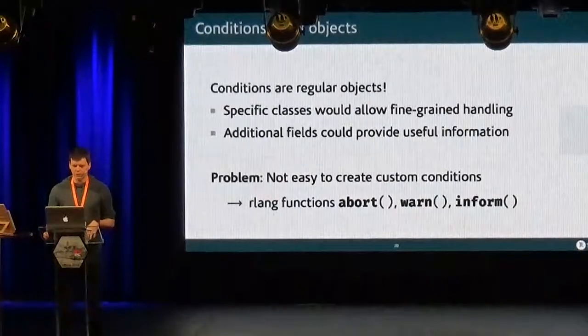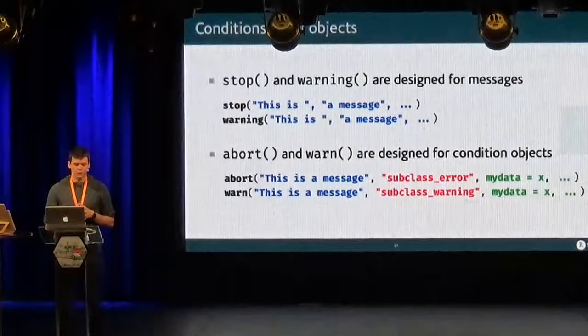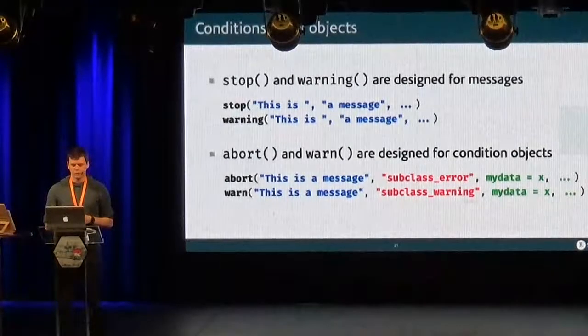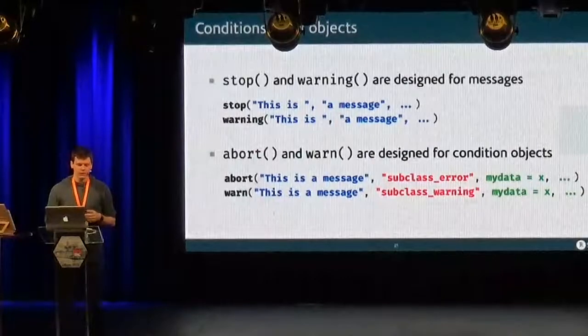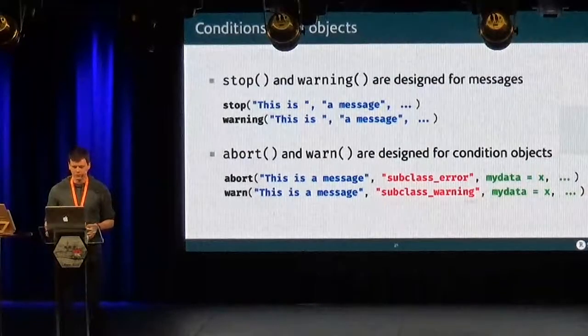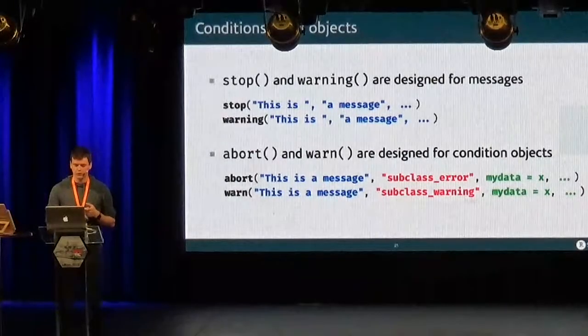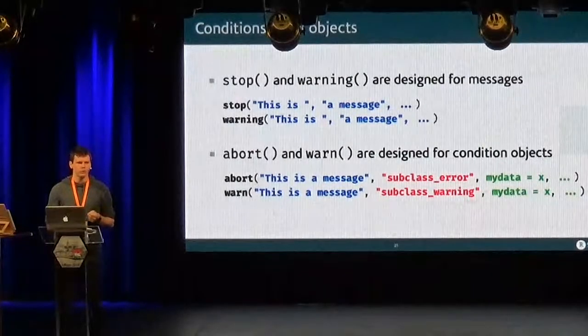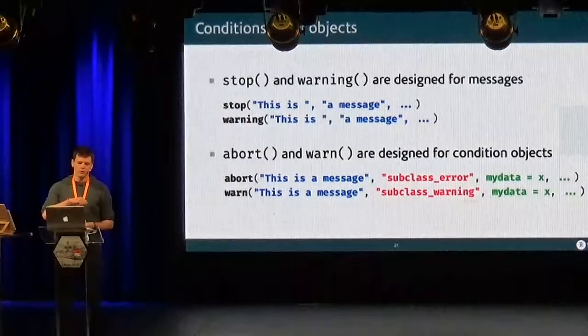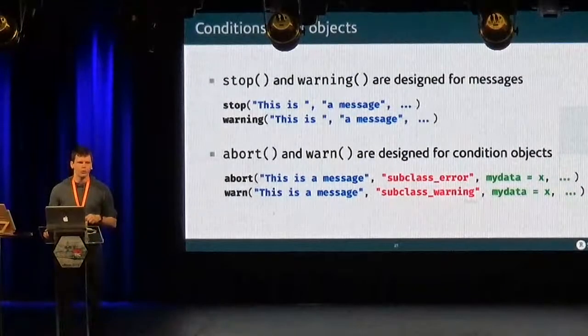And the problem is that it's not really easy currently to create these custom conditions. And so we have come up with these rlang functions, abort, warn, and inform. And so the difference between the functions stop and warning, and abort and warn, is that the former are really made for making it easy to create an error message. If you use abort, on the other hand, you have only one argument for the message. And then the second argument is your class. You're going to say, okay, this is my specific class with a unique identifier for this error. And then you can pass in any number of supplementary data that might be useful for reporting and handling the error.